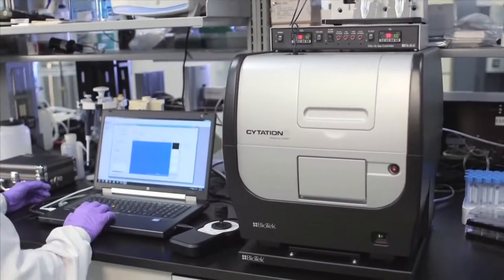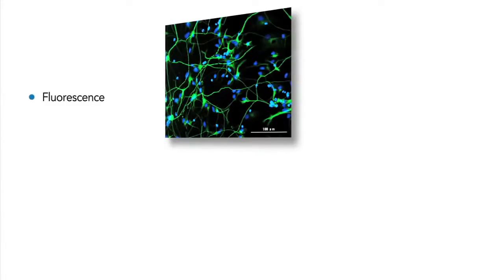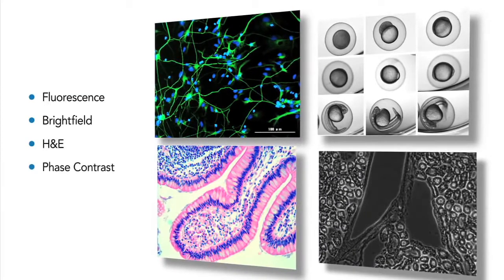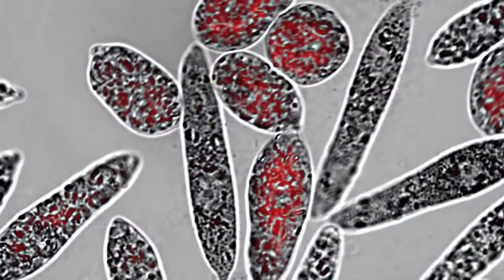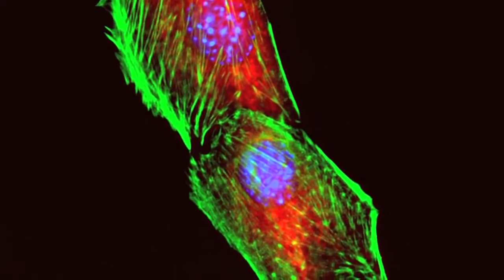Citation is ideal for research and assay development applications in cell biology, offering fluorescence, bright field, H&E, and phase contrast imaging. Up to 60x magnification covers a wide range of cell imaging applications, from cell counting and cell migration assays to detailed analysis of intracellular activity.